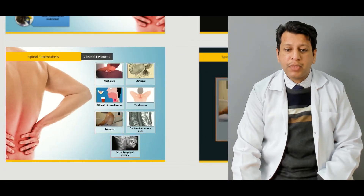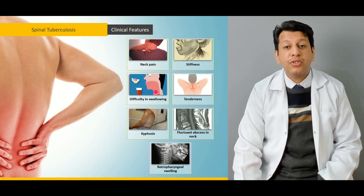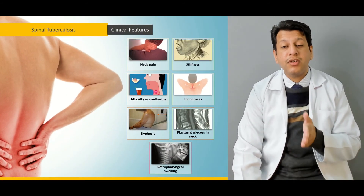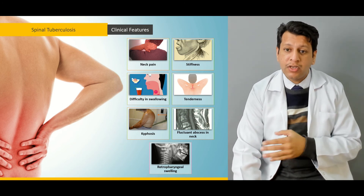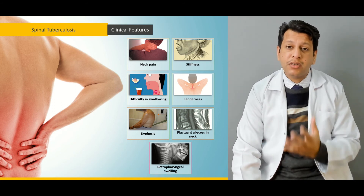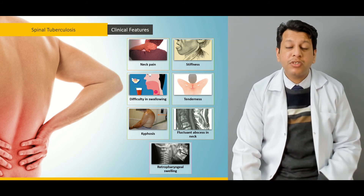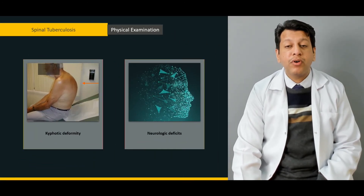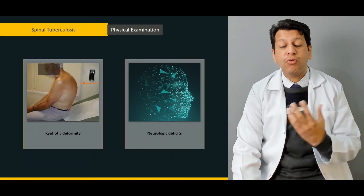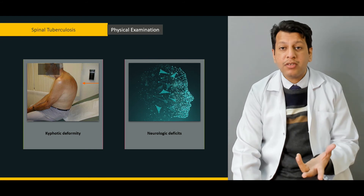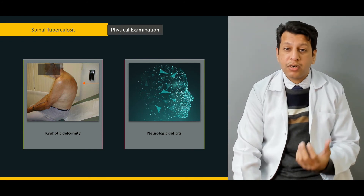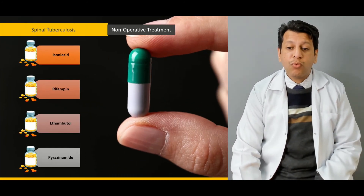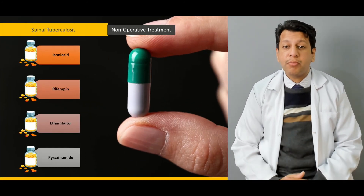From there we're moving on to the clinical features — what are the features of a spinal tuberculosis infection and what makes it point towards spinal TB rather than any pyogenic infection. We'll then move on to the physical examination: what to look for if the patient is suffering from spinal tuberculosis, and what treatment options are available.